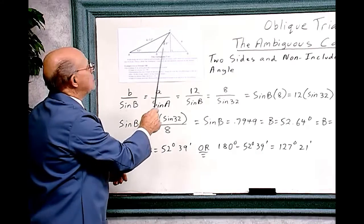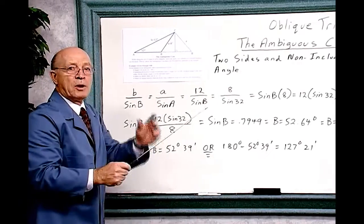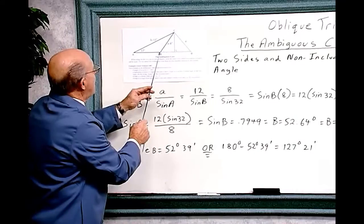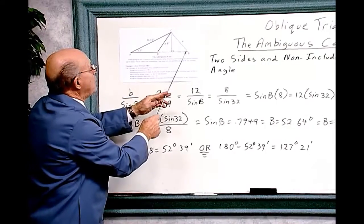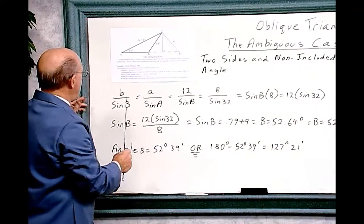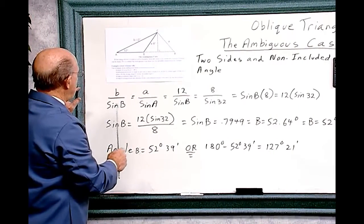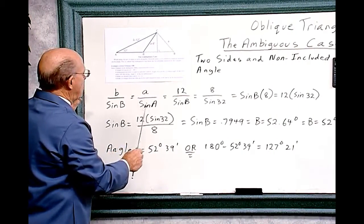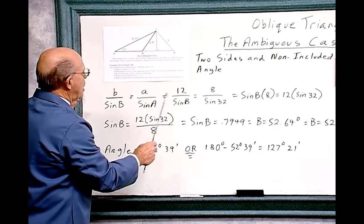So you can use the law of sines, but there are two possible angles - angle B over here or angle B over here. Now let's do that. The law of sines: B over sine B equals A over sine A. And we just have to put in the numbers.